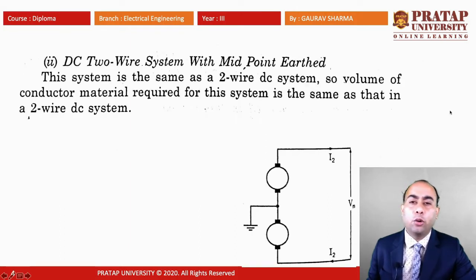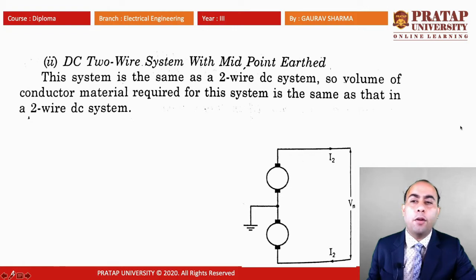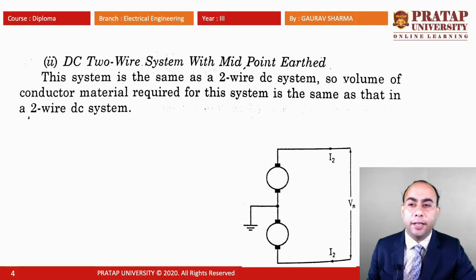For the DC two wire system with midpoint earth, the current flow is I2 and the voltage between the two conductors is VM. This system is the same as the DC two wire system, so the volume of conductor material required is the same. In both cases the volume of conductor material required is equal to K.